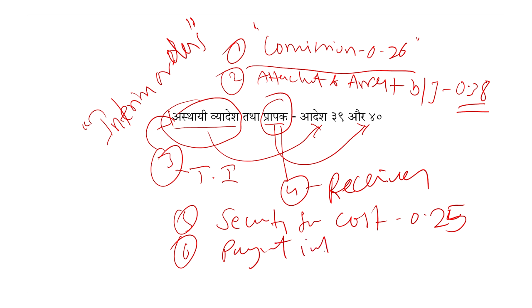Payment into court — this is Order 24. These are the interim orders in CPC. So, there are two interim orders which we have to discuss: one is temporary injunction and the other is receiver. Temporary injunction is Order 39 and receiver is Order 40. So we have to start with Order 39.